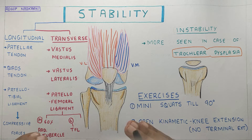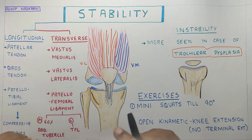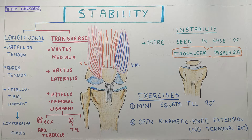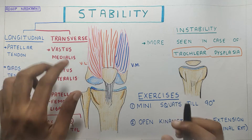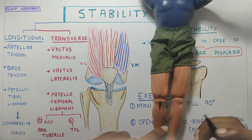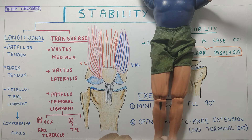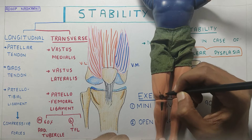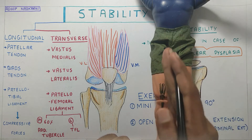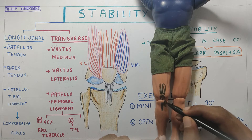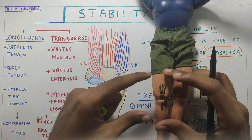When we talk about stability, the patella is very unstable in the extension position. To provide stability to the patella, there are two types of structures on the anterior aspect of the knee joint: longitudinal and transverse structures. The longitudinal structures are present in the longitudinal direction. The first is the patellar tendon, which is vertical. The second is the quadriceps tendon, also vertical. And third is the patellotibial ligament, connecting the patella to the tibia, which is also comparatively vertical. These structures create compressive forces on the knee joint.